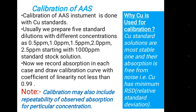Now we come to calibration of the AAS instrument. Calibration is done with a copper standard. Usually we prepare 5 standard dilutions with different concentrations — 0.5, 1, 1.5, 2, and 2.5 ppm — starting from a 1000 ppm standard stock solution. We record absorption in each case and draw a calibration curve with a coefficient of linearity not less than 0.99.